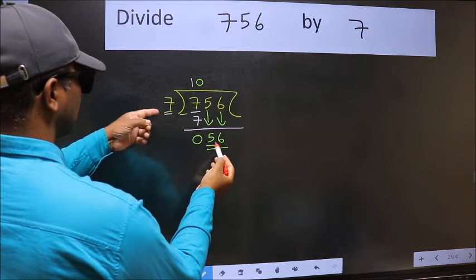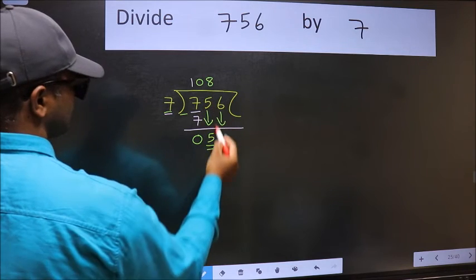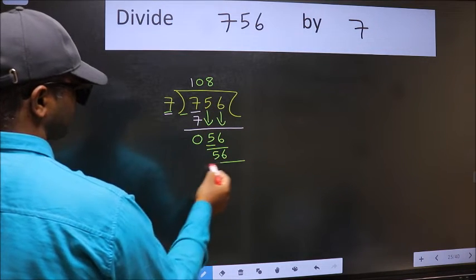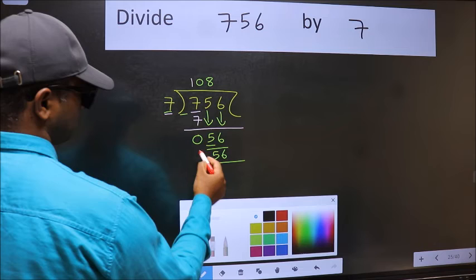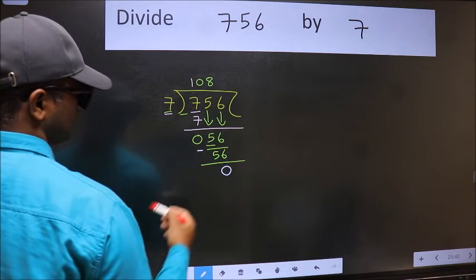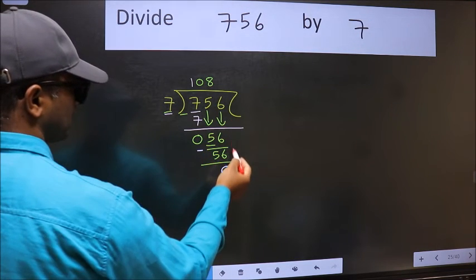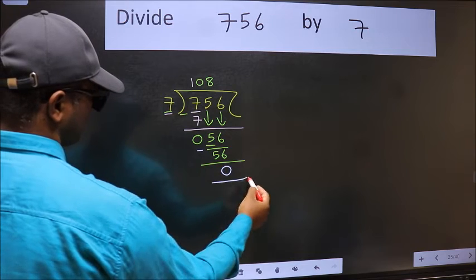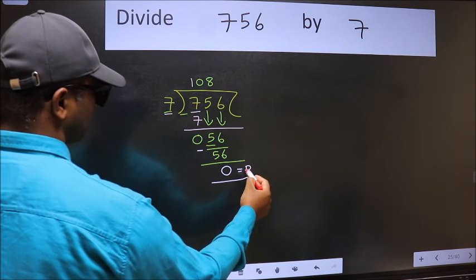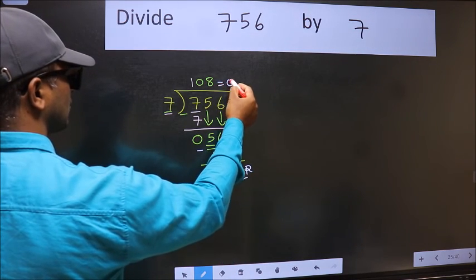Now 56. When do we get 56 in the 7 table? 7 times 8 is 56. Now we should subtract. We get 0. No more numbers to bring down, so we stop here. This is our remainder and this is our quotient.